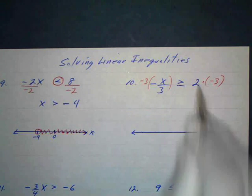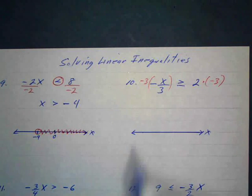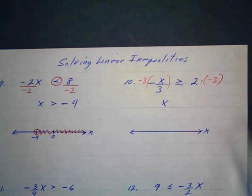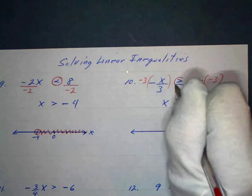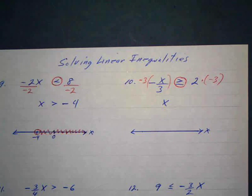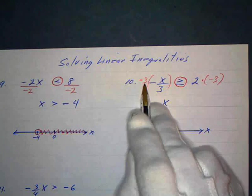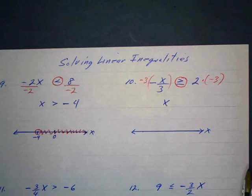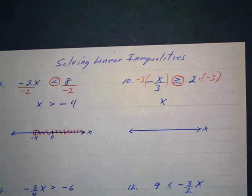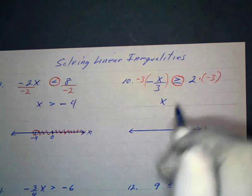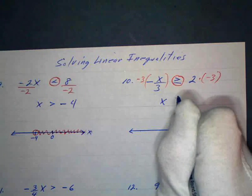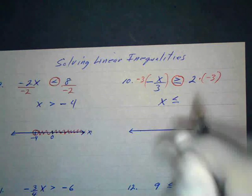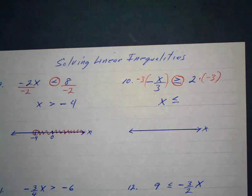A negative times a negative is positive, and 3 over 3 is 1, so I just have x on the left. But I forgot to circle my inequality! As soon as you multiply by a negative number going from one side to the other, you must remember to circle the inequality, or you'll forget to change the direction of the sign. In order to remove the circle, it's got to be pointing to the left now.